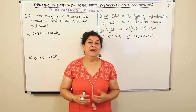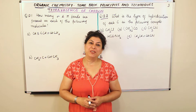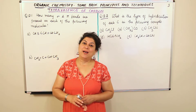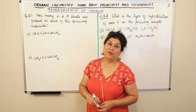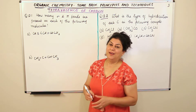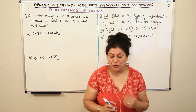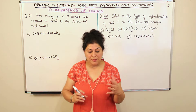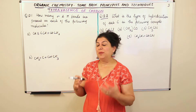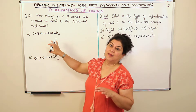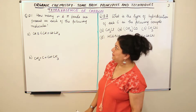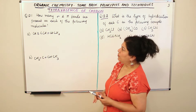Hello, I am Seema and welcome to part 3 of the chapter Organic Chemistry: Some Basic Principles and Techniques. In the previous video I started discussing the subtopic Tetravalence of Carbon and I explained the shapes of carbon compounds and some characteristic features of pi bonds. Moving ahead, it becomes important to discuss the solved examples in this subtopic because that helps you understand it better. So I am going to come to the first question.